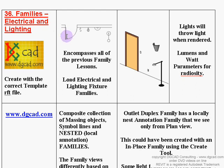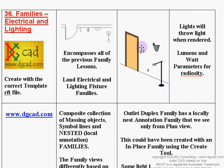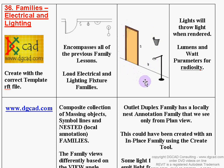For electrical and lighting families, the first thing is making sure you use the right template file when creating one from scratch in the family editor. You can open an existing family, edit it, and do a Save As. Families are listed in your project browser. Here are some examples: a single-pole light switch, a duplex outlet receptacle, a sconce light, and a freestanding lamp — some variations of the different electrical and lighting families available.